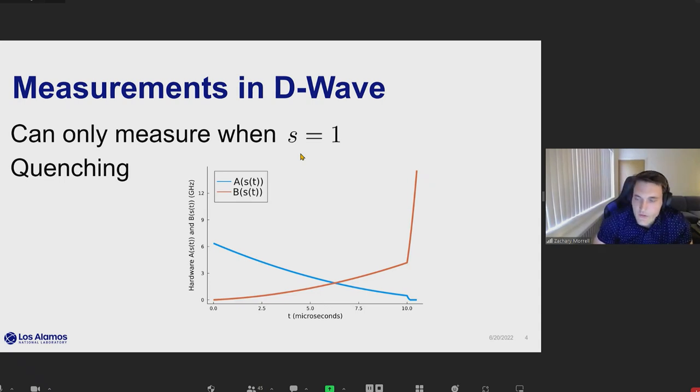The way that the documentation recommends that we work around this is by doing something called quenching. This is where, as we continue our anneal, once we want to perform our measurement, we rapidly increase the rate of the anneal. This has a few drawbacks, because if you're working with a relatively small system size, something that you could actually simulate on a classical computer,